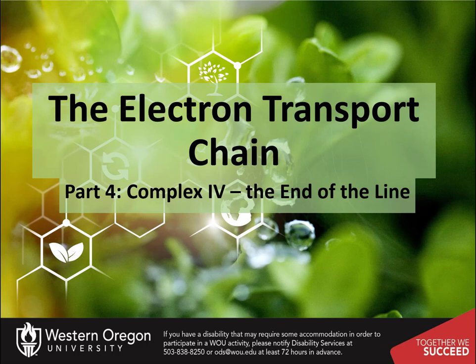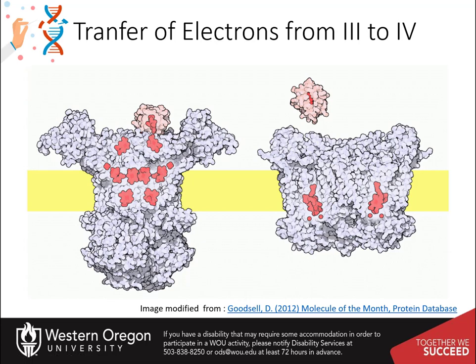Welcome to part 4 of our lectures on the electron transport chain. This diagram shows the transfer of electrons via cytochrome C from complex 3 to complex 4 in the electron transport chain.